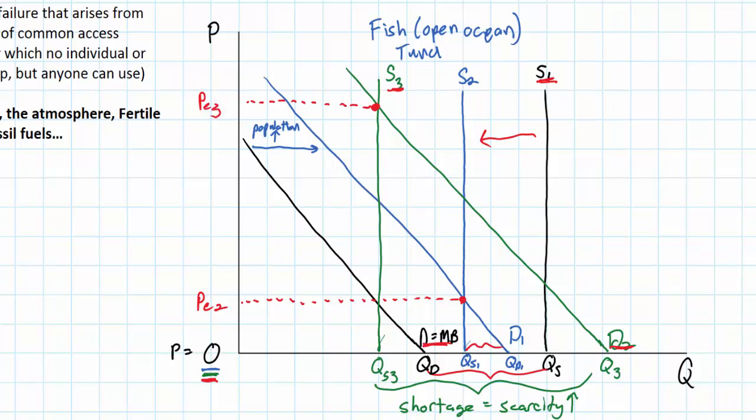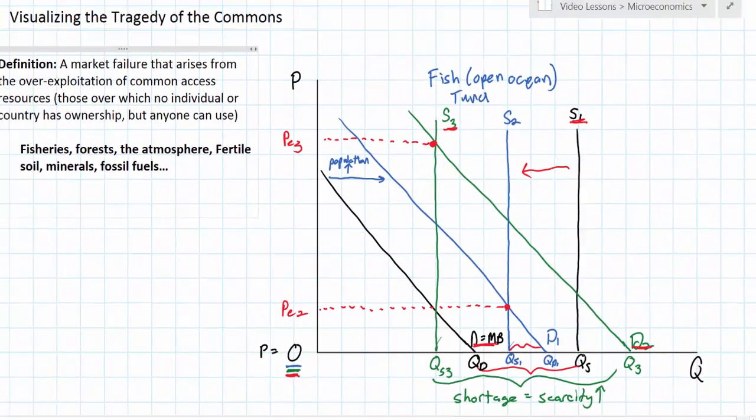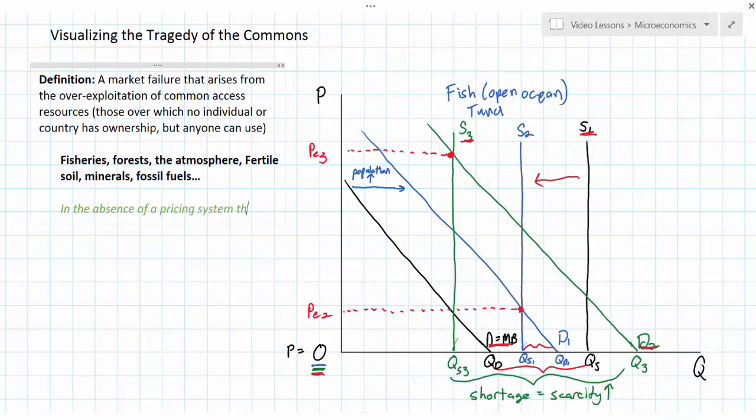As demand continues to rise to D2 and supply continues to fall to S3, what should happen is the price should be increasing for this now increasingly scarce natural resource. So this could be considered PE3. But in the absence of a price mechanism, if prices remain at zero, then the quantity demanded will far outstrip the quantity supplied.